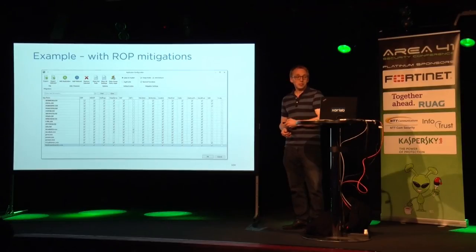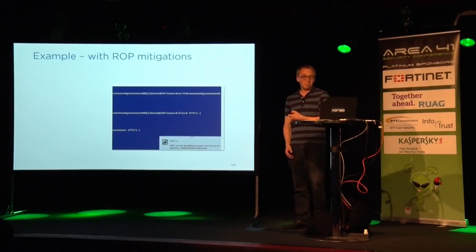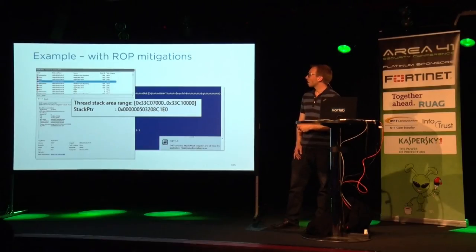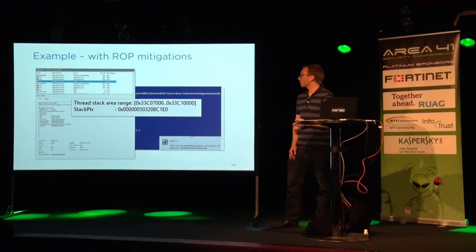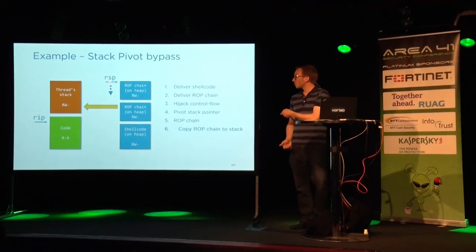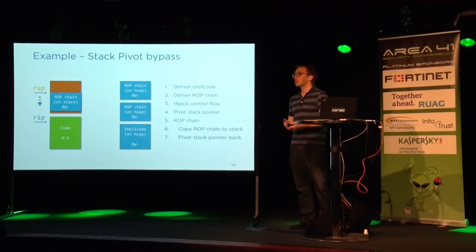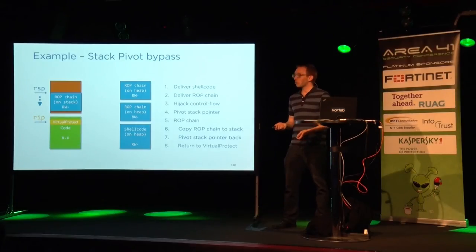We enable EMET and see that our exploit doesn't work anymore — we get an EMET violation about stack pivoting. EMET detected that the stack pointer was out of bounds for the VirtualProtect call. So having our ROP chain on the heap doesn't work. Instead, we use the first ROP chain to copy a second ROP chain to the stack, then pivot the stack pointer back to the original stack but at a different location, and now we can call VirtualProtect without EMET complaining about stack pivoting.